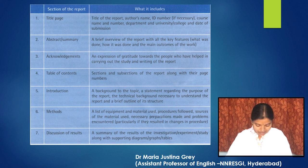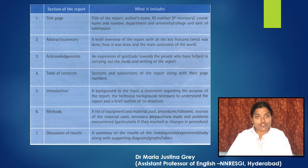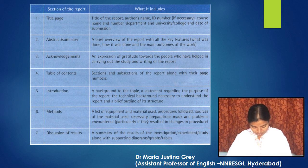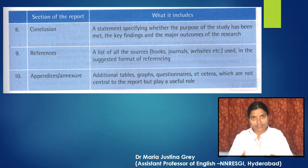Then we have the methods section, which includes a list of equipment and materials used, procedures followed, sources of the material used, necessary preparations made, and problems encountered — particularly if they resulted in changes in the procedure. The discussion of results is a summary of the results of the investigation or experiment or study, along with supporting diagrams, graphs, and tables.